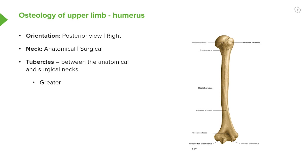Looking at the posterior view of a right humerus, there is less detail here. On the posterior surface, the head of the humerus points medially to articulate with the glenoid cavity. We can see the greater tubercle but not the lesser tubercle or the intertubercular sulcus. We can make out the anatomical neck between the head and the greater tubercle, and distal to the greater tubercle, the surgical neck is visible. We'll return to the surgical neck as important structures run around it.